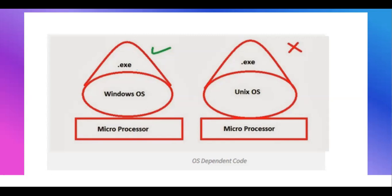This is why, when we install any software, there are different file formats. A .exe file will run on a Windows system. For macOS, a .dmg file will run. For Android, an .apk file will run. Based on those files only, we can install and run our applications.